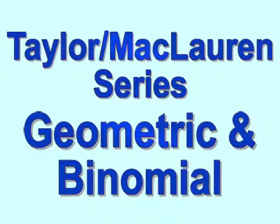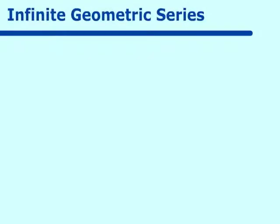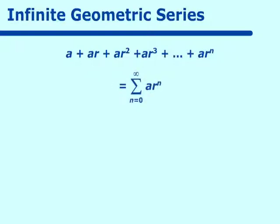What is an infinite geometric series? We already know that an infinite geometric series starts out with A, and then we add AR plus AR squared plus AR cubed, plus an AR to the N, and that equals the sum from N equals zero to infinity of AR to the Nth power. You learned this in your algebra classes as well as in our review of geometric series.